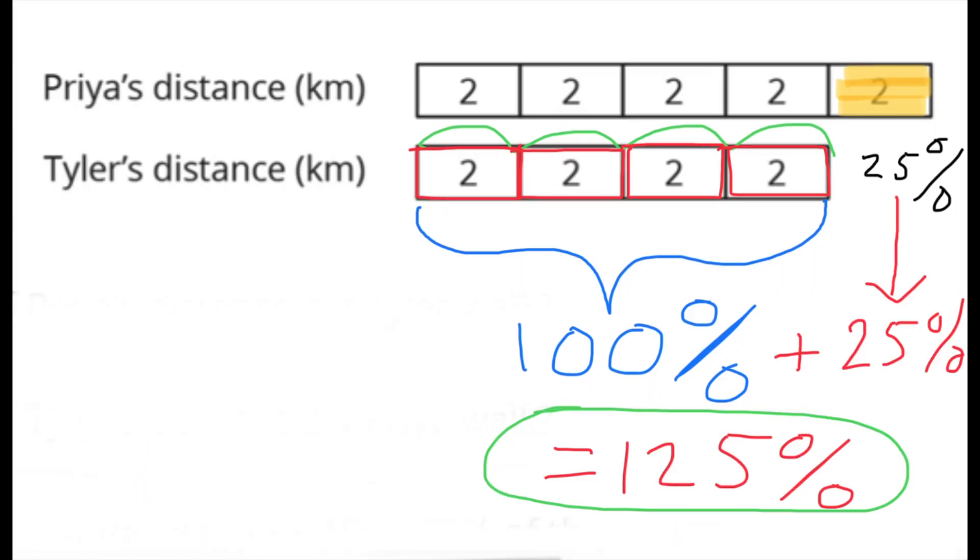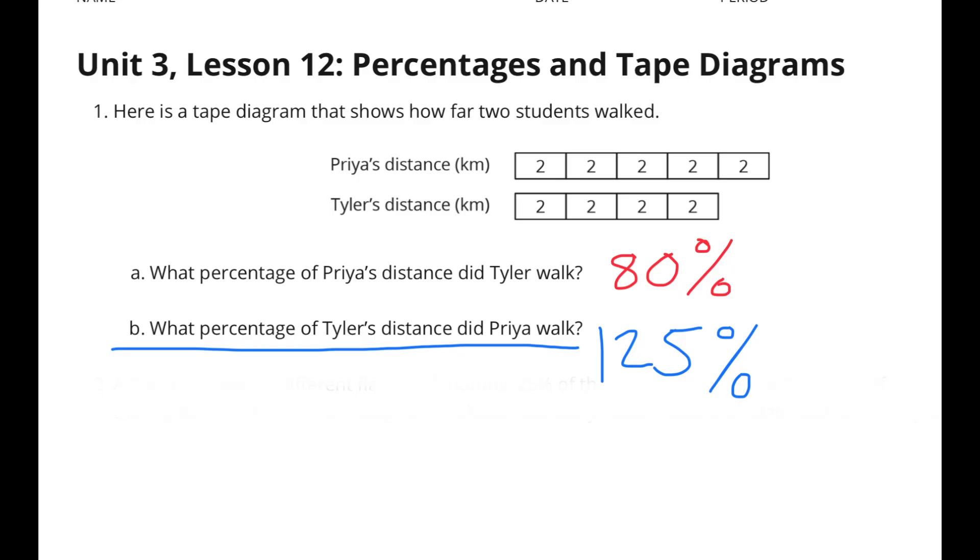Priya walked 25% further than Tyler. Priya walked 125% the distance that Tyler walked.